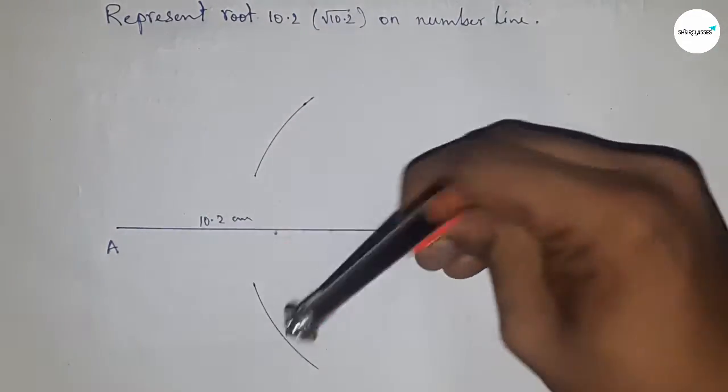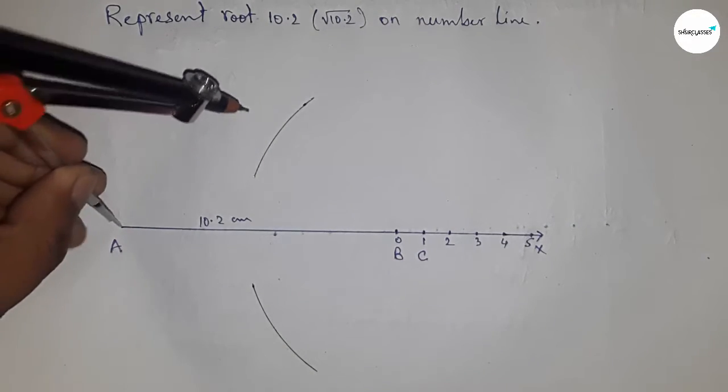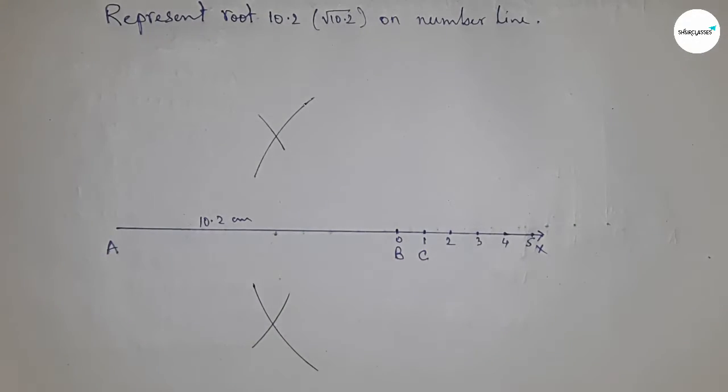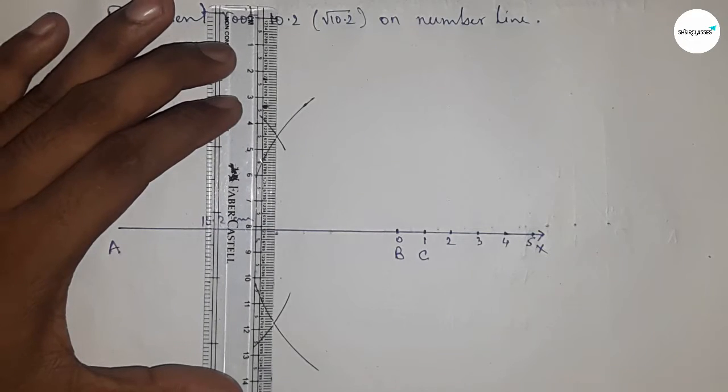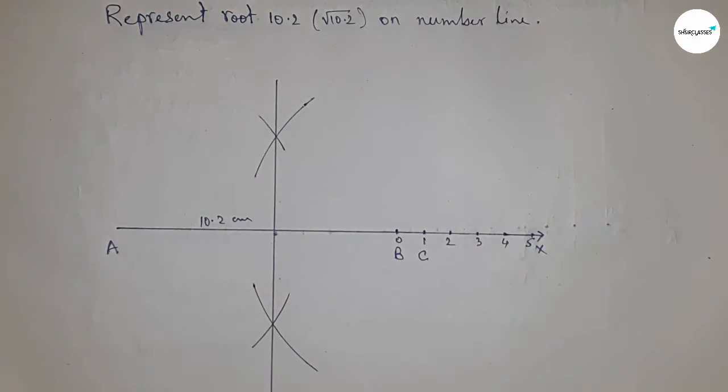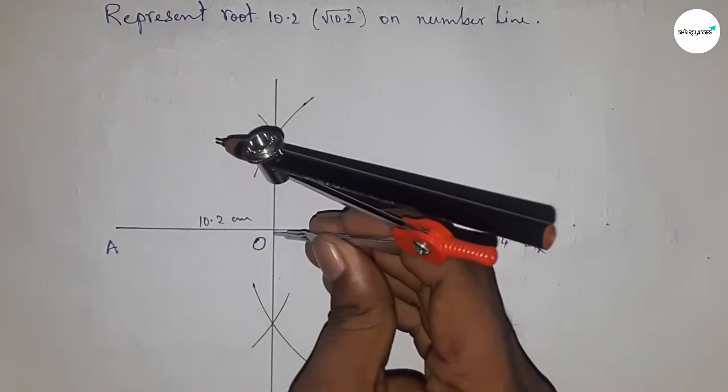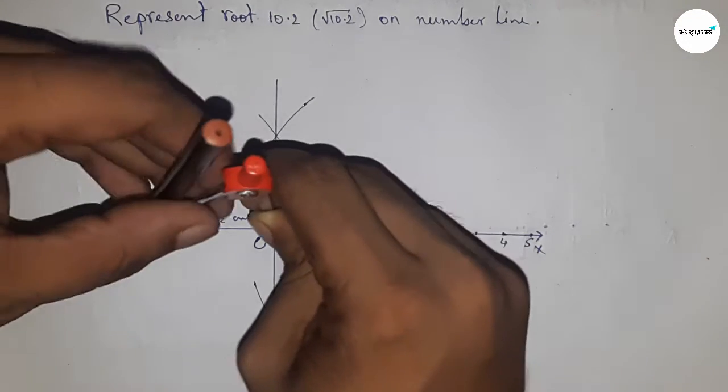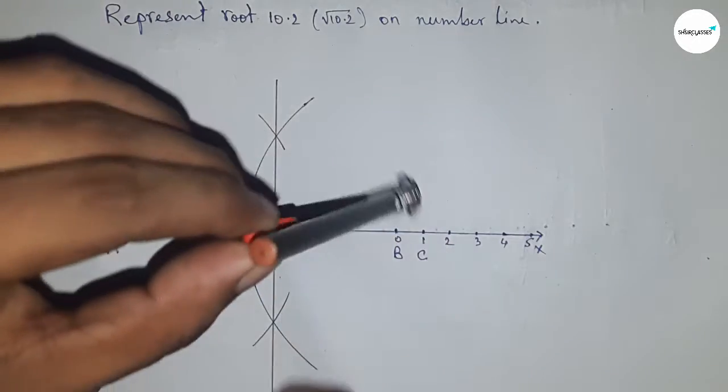Draw the arcs this way with the same length, then put the compass here and cut the arcs. Next, join these at the point where they meet at point O. Take the length OA and OC to draw a semicircle.